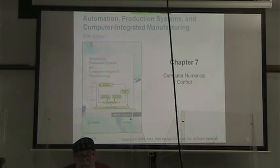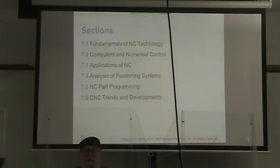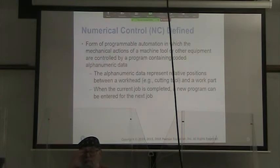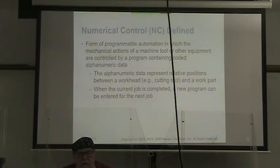Our next exciting development is chapter number seven, and that is about computer numerical control. The definition of numerical control: a form of programmable automation in which the mechanical actions of a machine tool or other equipment are controlled by a program containing coded alphanumeric data. The alphanumeric data represent relative positions between a work head, e.g. a cutting tool, and a work part.